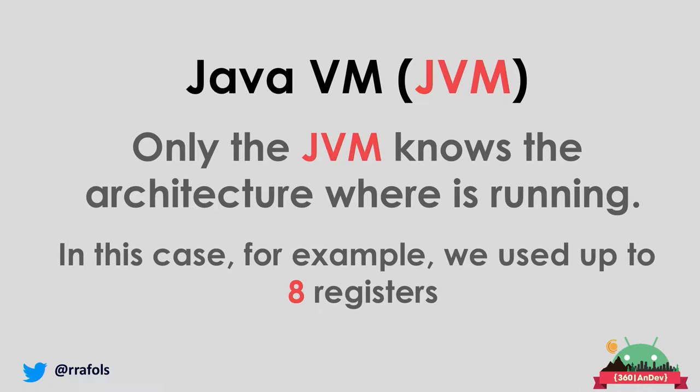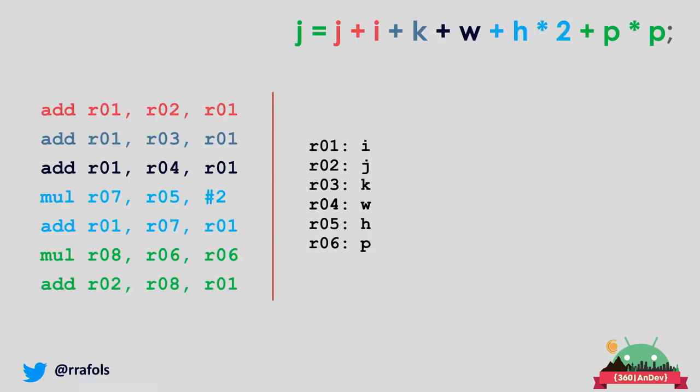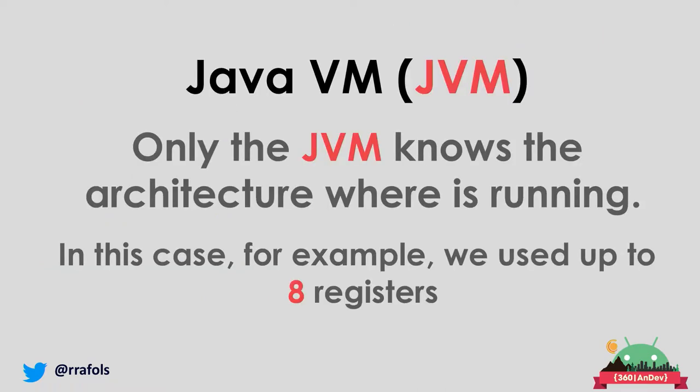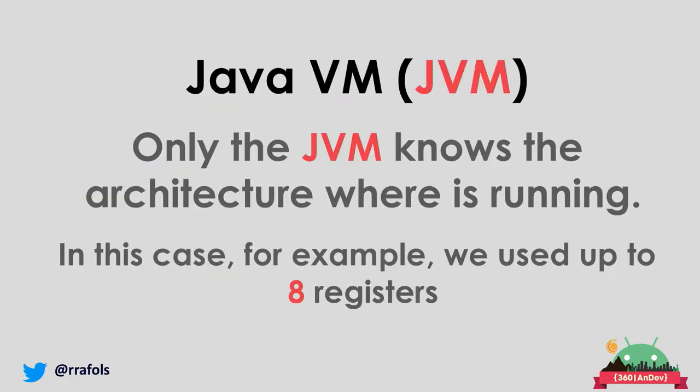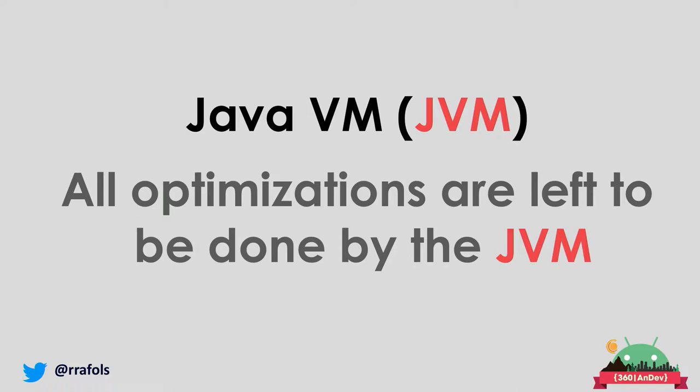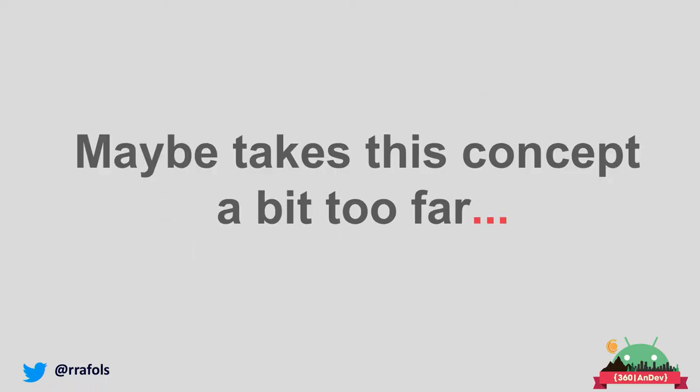The only one that knows where the Java code is actually executing is the Java Virtual Machine. For example, we used up to eight registers here, but what would happen if we tried to run this on a Commodore 64? A Commodore only had three registers, so things get quite messed up. All the optimizations needed to run it the best way possible are left to the JVM.